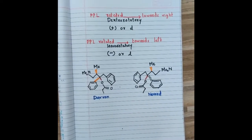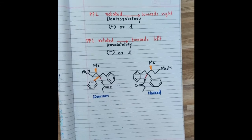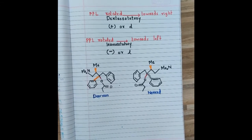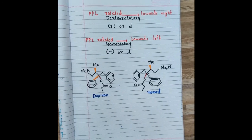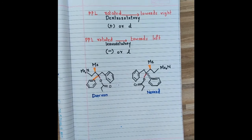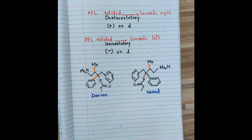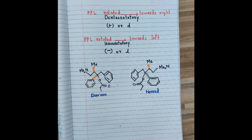Optical isomers are of great importance because different optical isomers have different effects on our body. The phenomenon of optical activity was discovered in 1815, but why some molecules show optical activity was not clear until the relation between optically active substances and their structure was determined by van't Hoff and Le Bel in 1874.